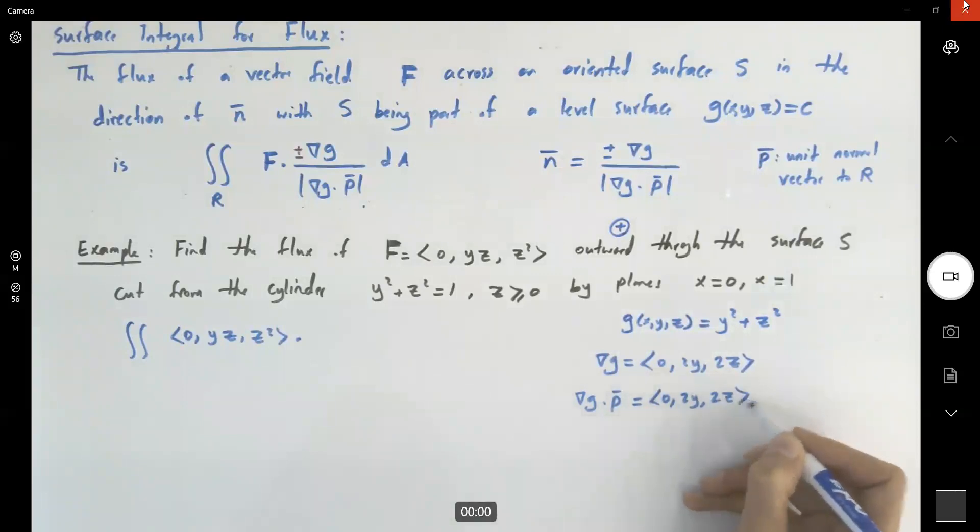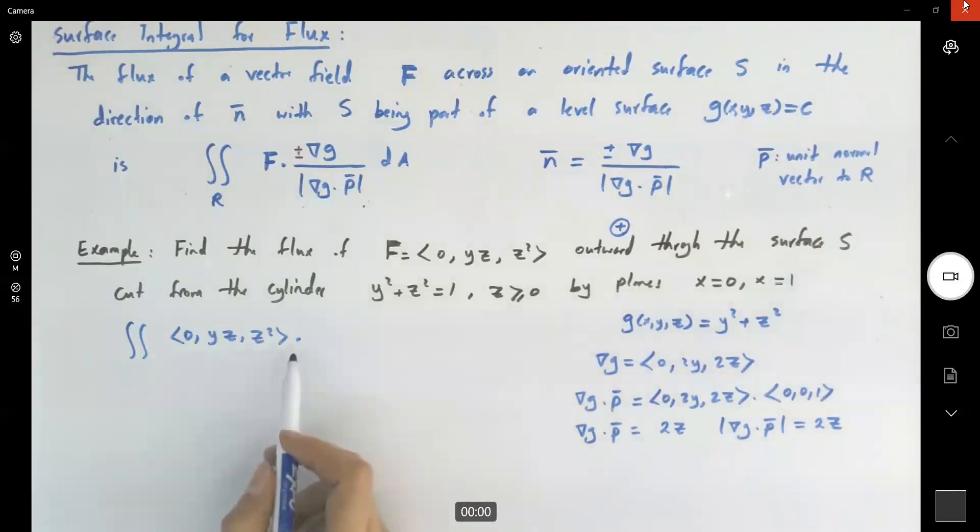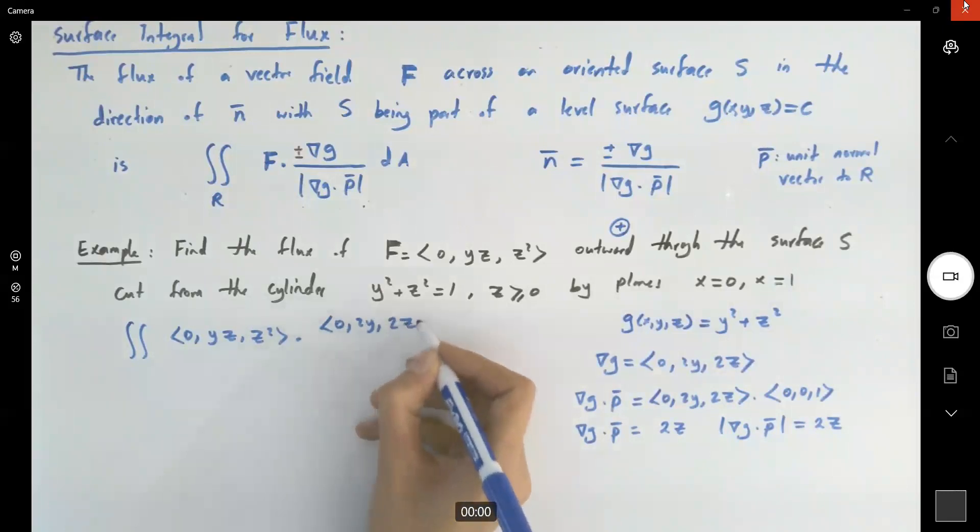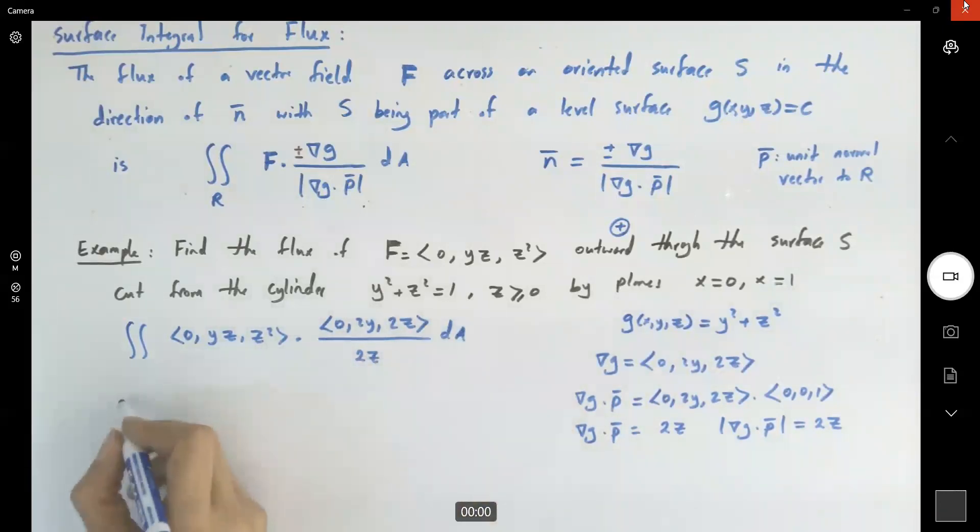The gradient of g dot p is (0, 2y, 2z) dot our p, which is parallel to the z-axis: (0, 0, 1). So the gradient of g dot p is 2z. The magnitude of gradient g dot p equals 2z. So far we have (0, 2y, 2z) divided by 2z and dA.